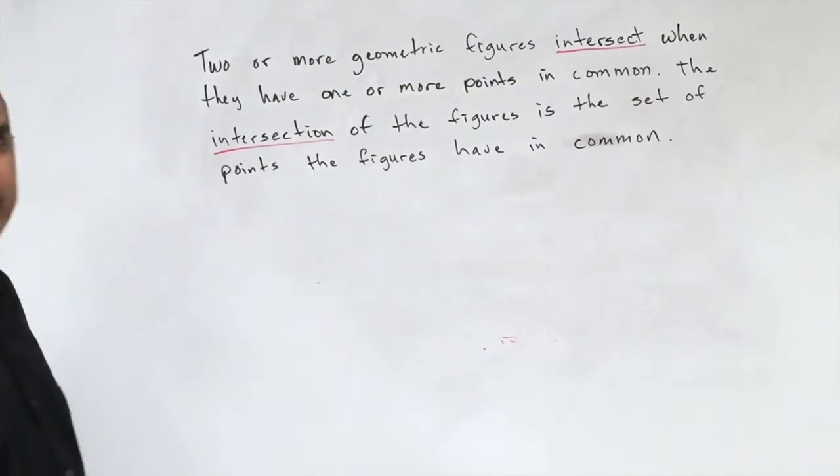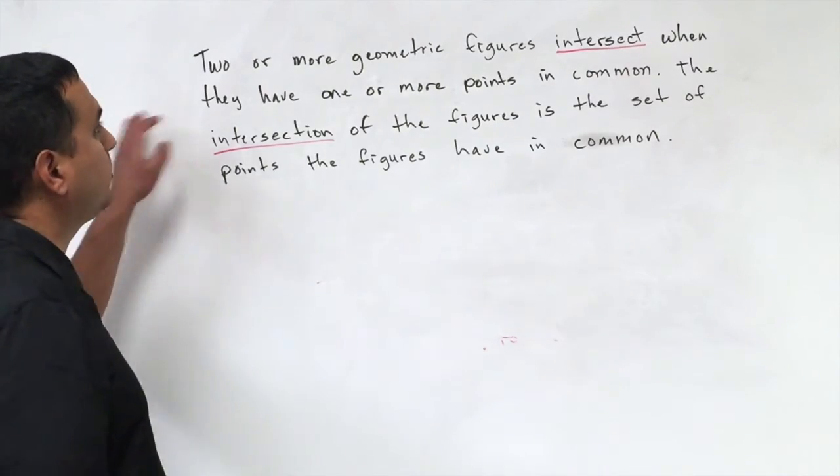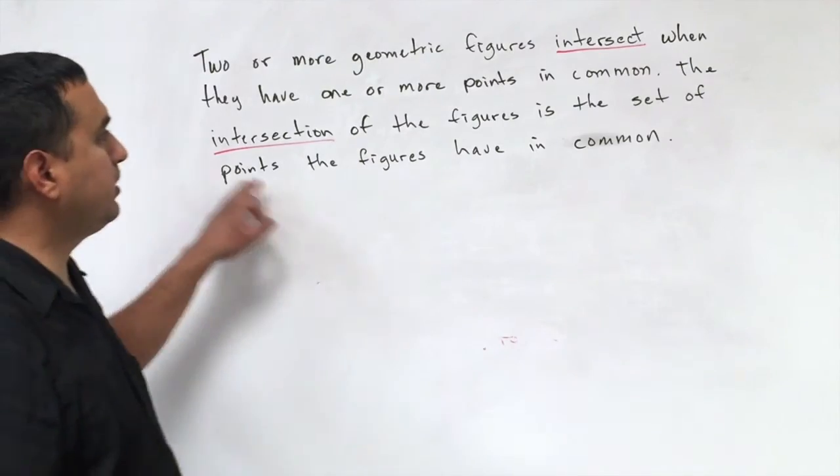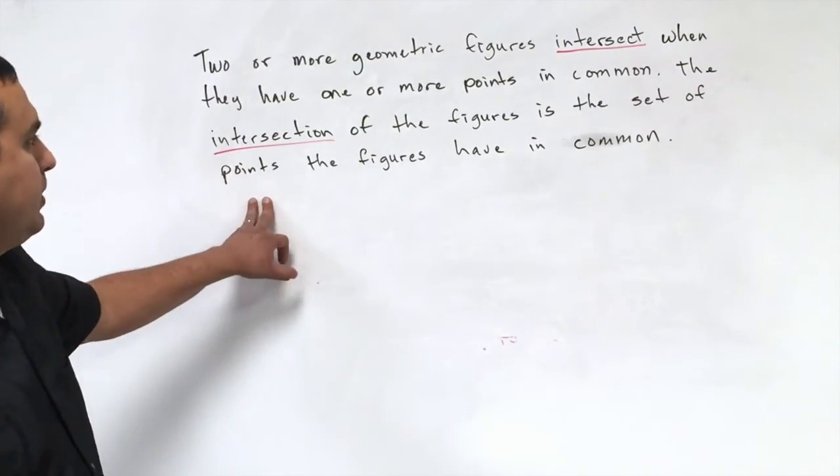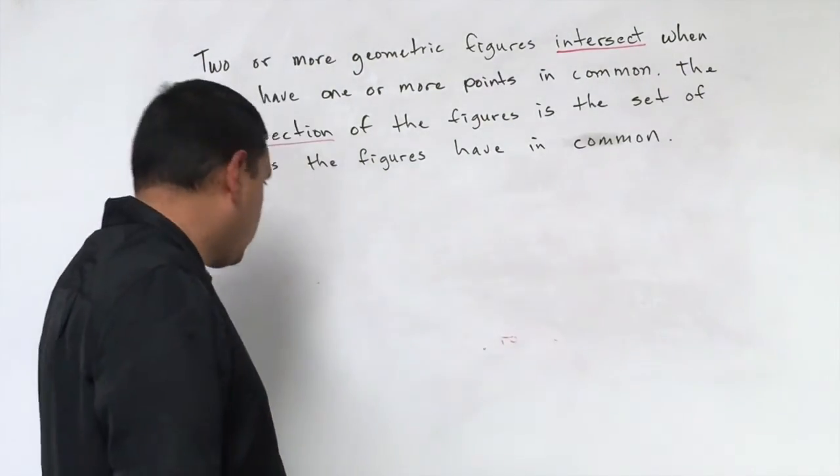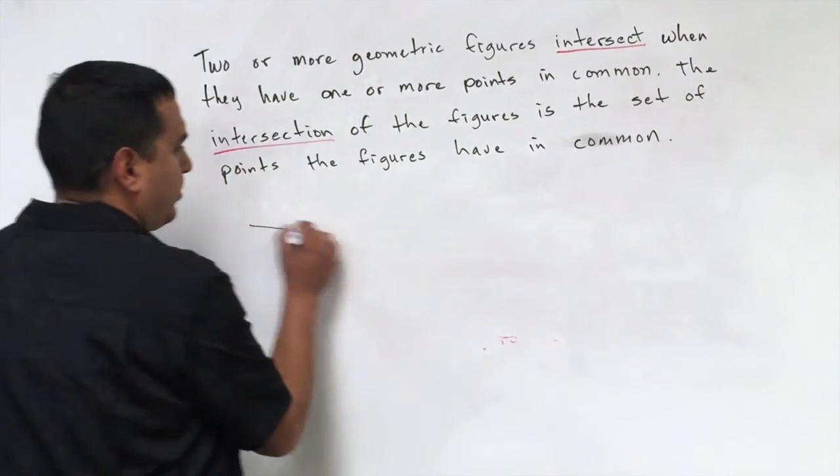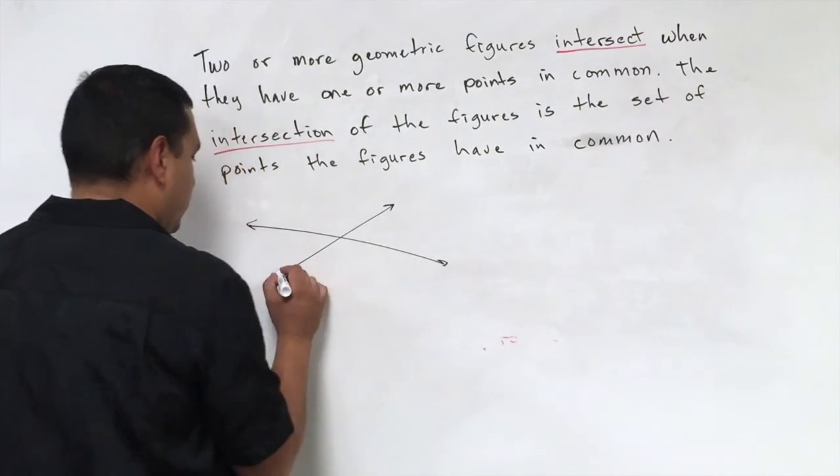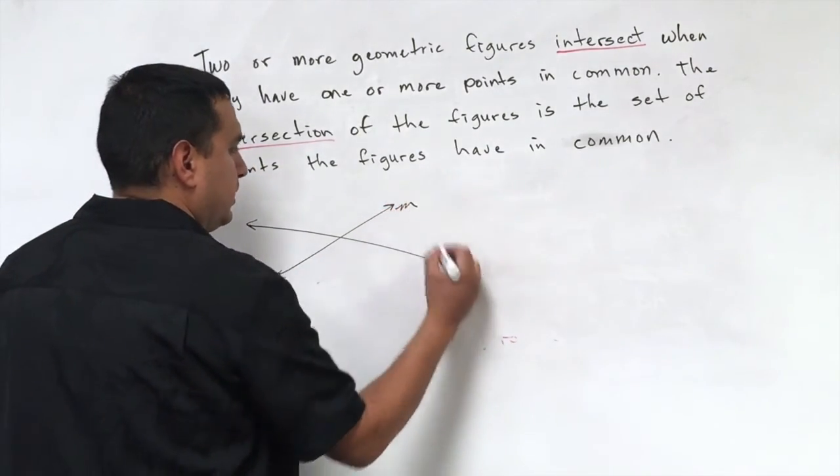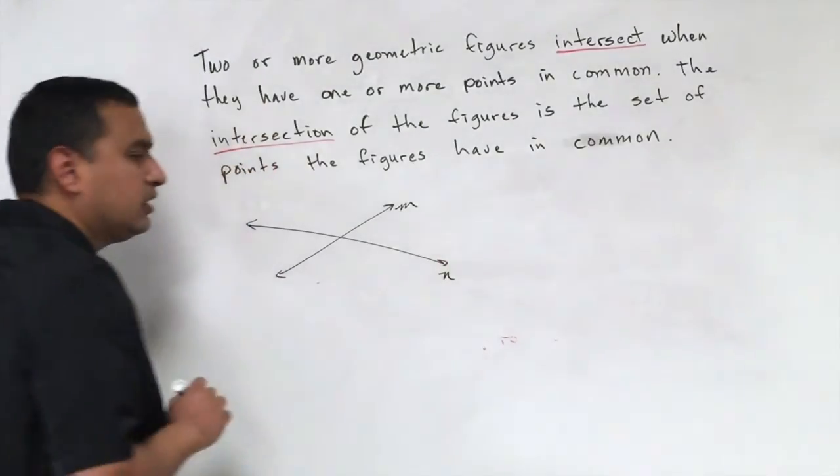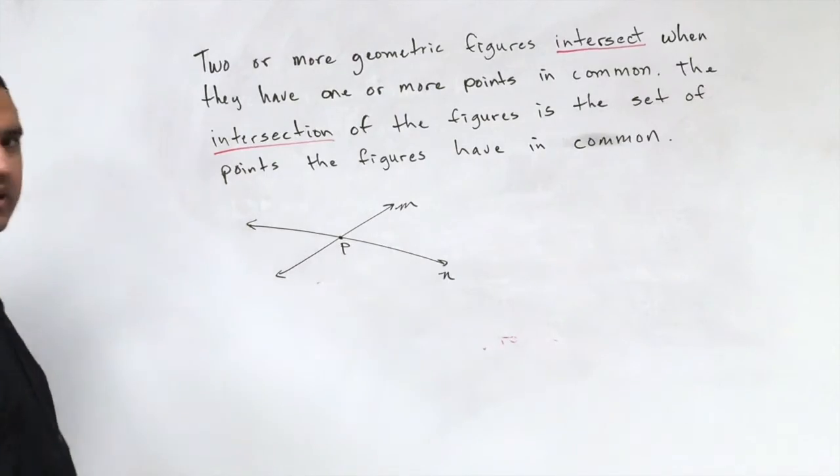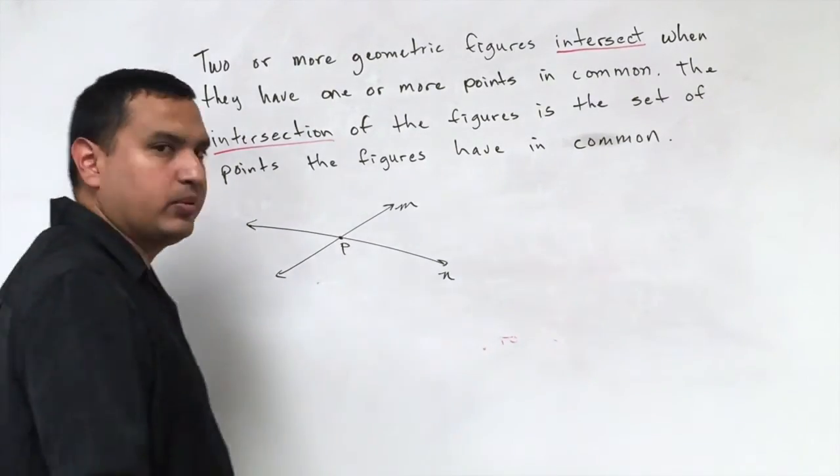On this last piece, we have a little bit more terminology just to kind of describe what an intersection is and what it looks like. Two or more geometric figures intersect when they have one or more points in common. The intersection of the figures is the set of points the figures have in common. So something to remember is that when two lines intersect, their intersection is one point. So here I have line M. Let's call this one line N. When two lines intersect, they have this one intersection point in common. That would be one example.